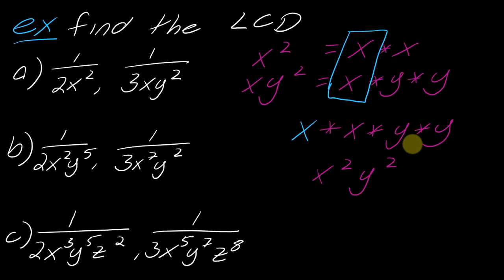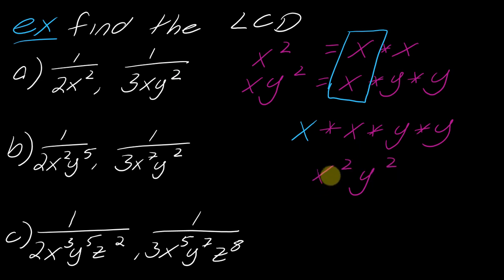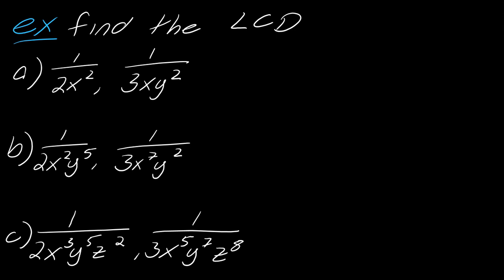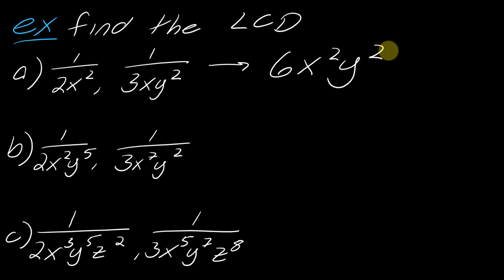Going back to the two denominators x squared and xy squared, you can see the easy shortcut: make sure each letter is represented in the LCD and then choose the highest exponent for each. That's x squared from the first and y squared from the second, giving a variable part of x squared y squared. So the full LCD for example (a) is 6x²y².